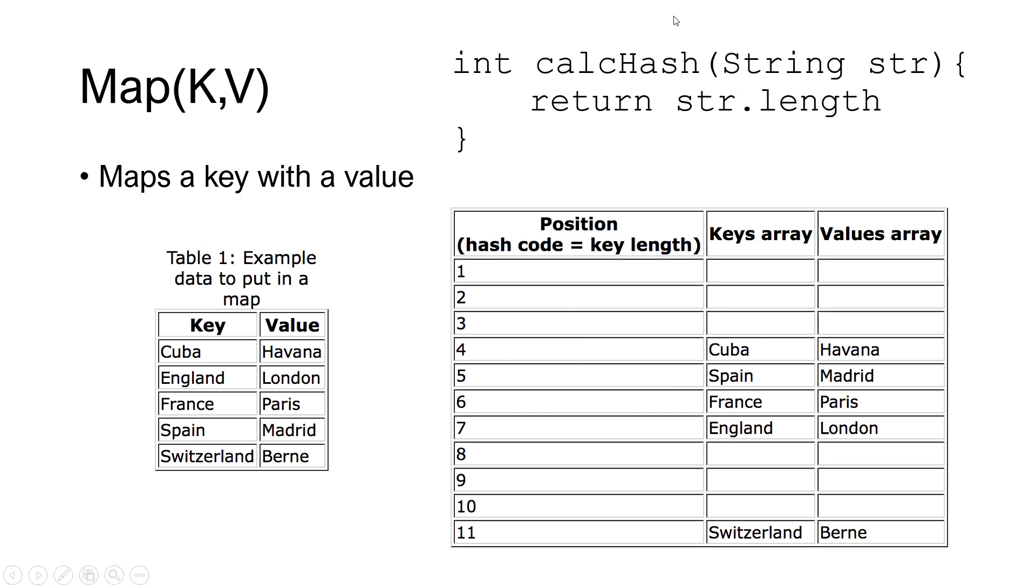So if we take a really simple hash function that can be improved a lot, but this is a really simple one that basically takes the length of the string. We can see Cuba is length of 4 so it's going to determine that it will be put in the index 4. Spain is 5 and France 6 and England.